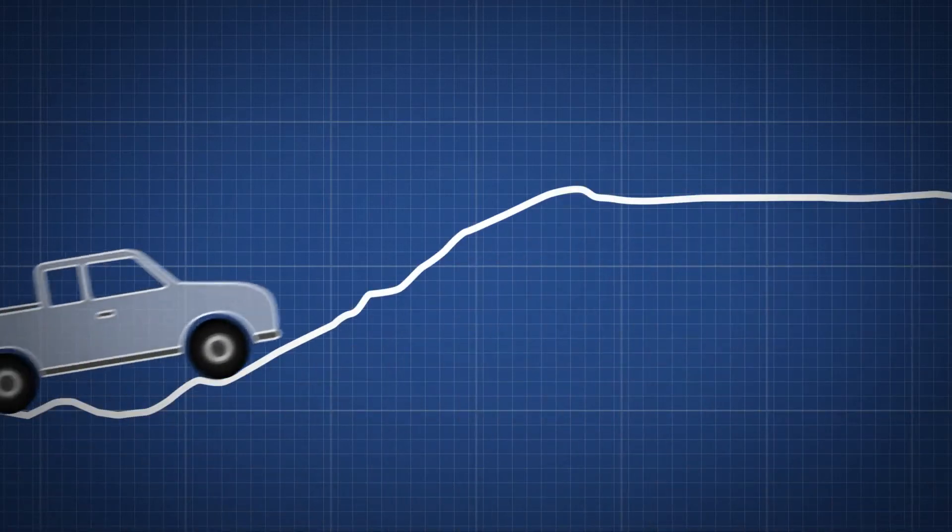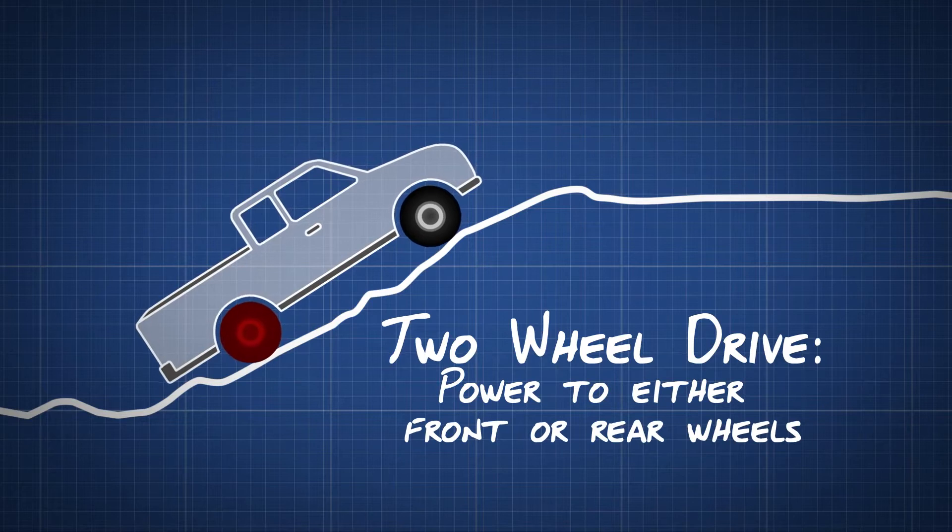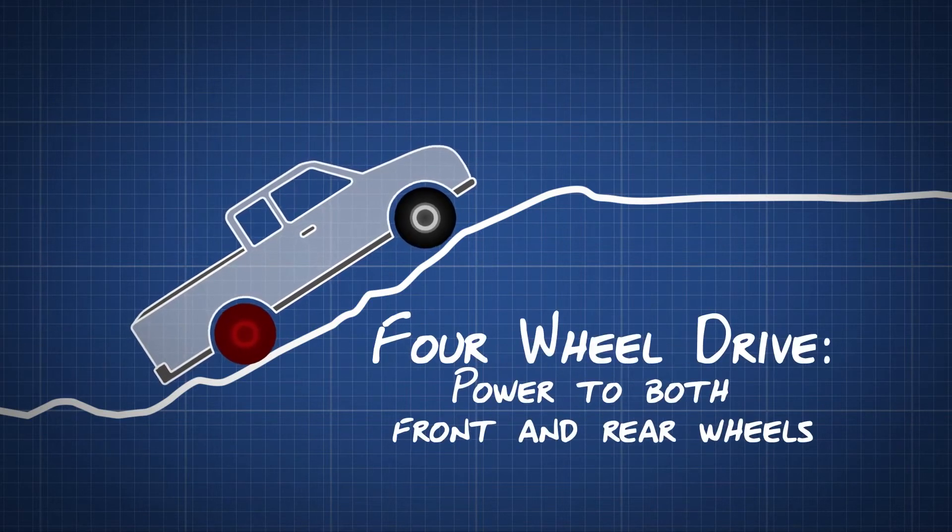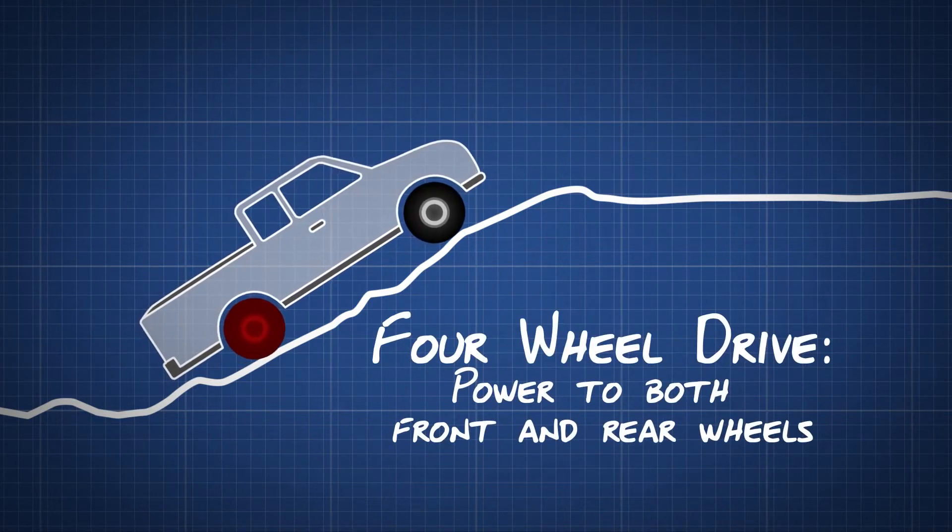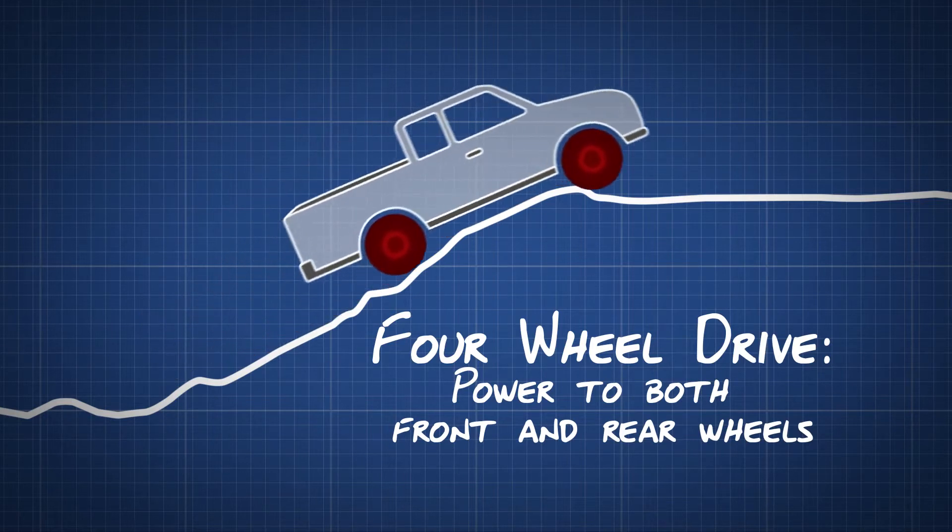Unlike a two-wheel drive car, where the power goes either to the front or rear wheels, four-wheel drive works by sending power from the engine to all four wheels. This means that all the wheels are powered, which gives the vehicle more stability and power.